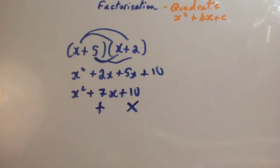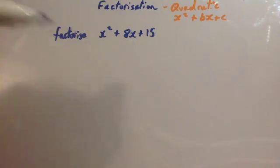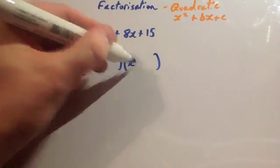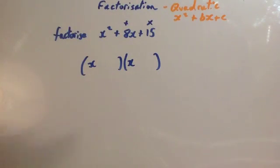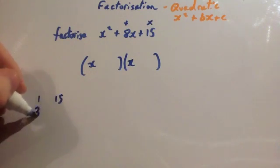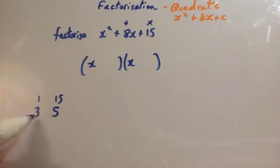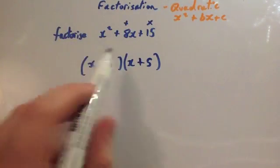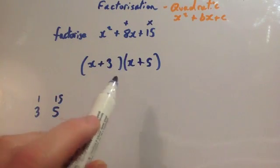Let's have a look at a couple of examples. We've been asked to factorize x squared plus 8x plus 15. So first of all, let's put our two brackets down and put an x at the front of both of them. The two numbers will multiply together to give you 15 and add together to give you 8. The numbers that multiply to give 15 could be 1 and 15, or 3 and 5. They need to add together to give 8, so clearly it's going to be plus 3 and plus 5. Let's just check it: x squared plus 5x plus 3x — that's 8x — plus 15. And that's it done.